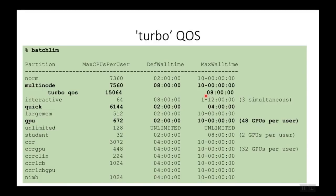This Turbo QoS is particularly relevant for molecular dynamics users because MD jobs can be checkpointed and restarted. Since a molecular dynamics job can be restarted, it is easy to divide a long run — say of 1 million steps — into 10 jobs of 100,000 steps each, then stitch the trajectories together using whatever software you like. This makes it relatively easy to construct molecular dynamics jobs that fit within the 8-hour max wall time, ensuring good turnover of resources in the multinode partition.